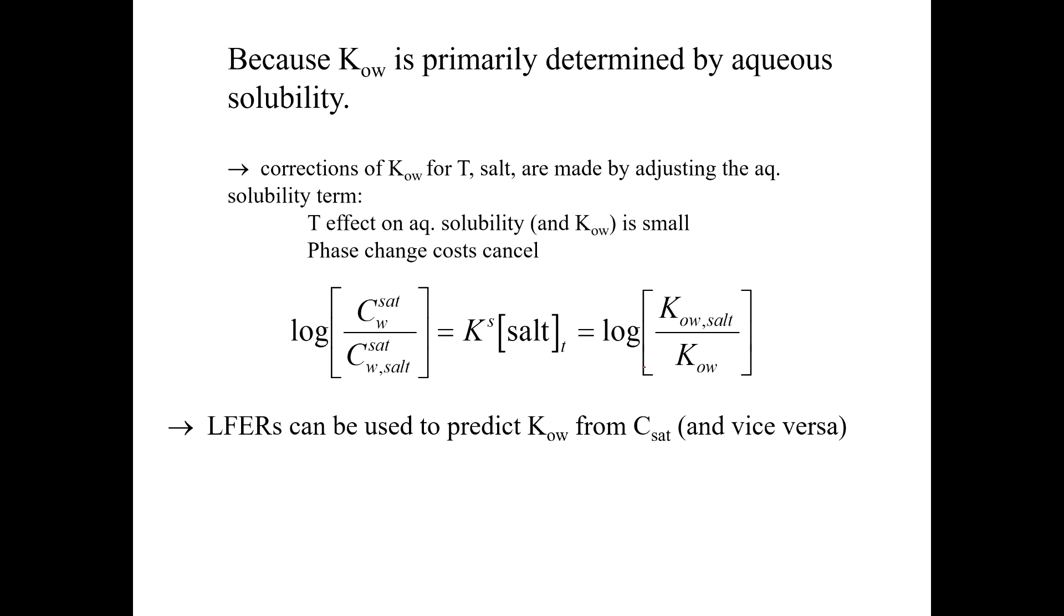So because KOW is primarily determined by the aqueous solubility, the corrections for temperature and salt are going to be made by adjusting the aqueous solubility term. Remember in the previous lecture I said that you can get away with just using Setschenow constants to predict how KOW would change. And it is true that some of that salt dissolves in the octanol. But it's also true here that the KOW is really primarily determined by what's going on on the aqueous side of the equation. So that's one of the reasons why we can get away with using this approach, using the Setschenow constant.